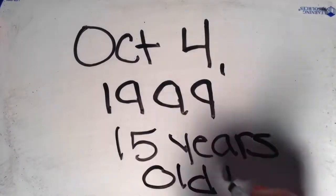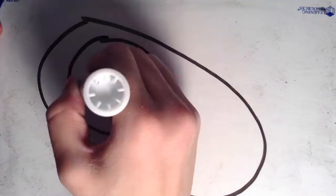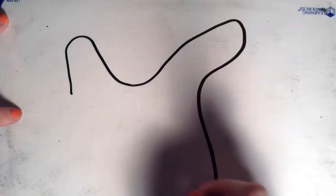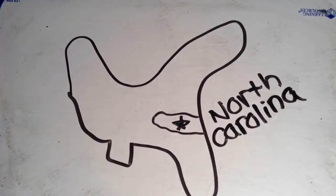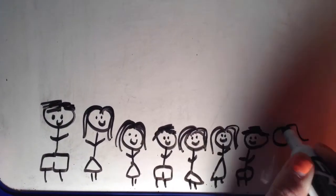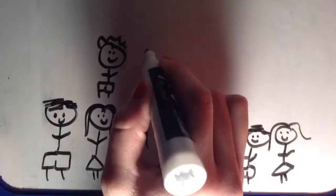So I was born on October 4th 1999 and right now I'm 15 years old. This is me. I'm a baby. I was a baby and I was born in Charlotte, North Carolina. So this is my family. I have five sisters and three brothers plus my mom and dad we have 10 people in our family.